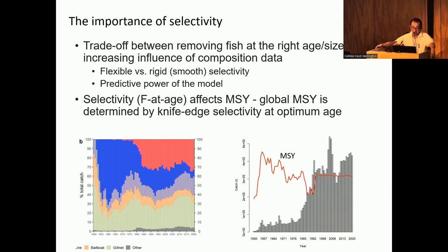There's a trade-off between those roles. Removing the fish at the right age or size generally requires that you use a more flexible selectivity. In other words, if you're trying to estimate F at age or size better, then your selectivity becomes a nuisance parameter. On the other hand, if you try to get more information from your composition data and make inference about your population, then it tends to use more smooth or rigid selectivity. This business of flexibility also has implications on the predictive power of your model, which can become important when it comes to projections.